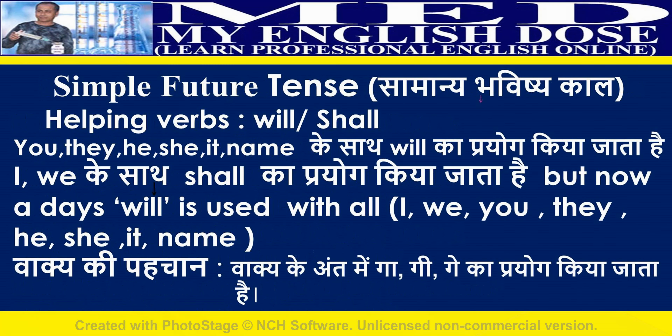Simple future tense helping verbs are 'will' and 'shall'. Use 'will' with you, they, he, she, it, and a name. Use 'shall' with I and we. But nowadays 'will' is used with all nouns and pronouns.